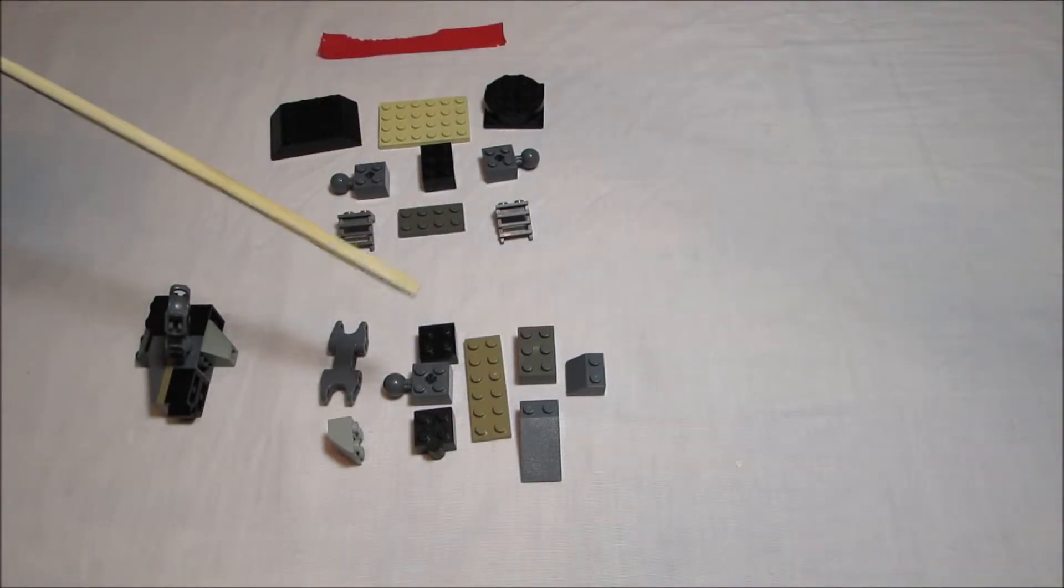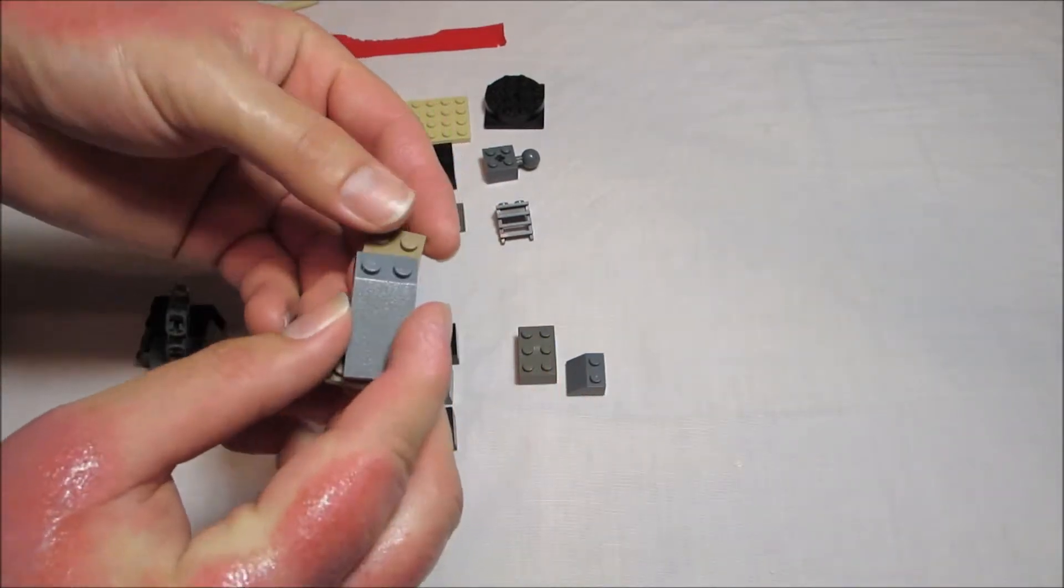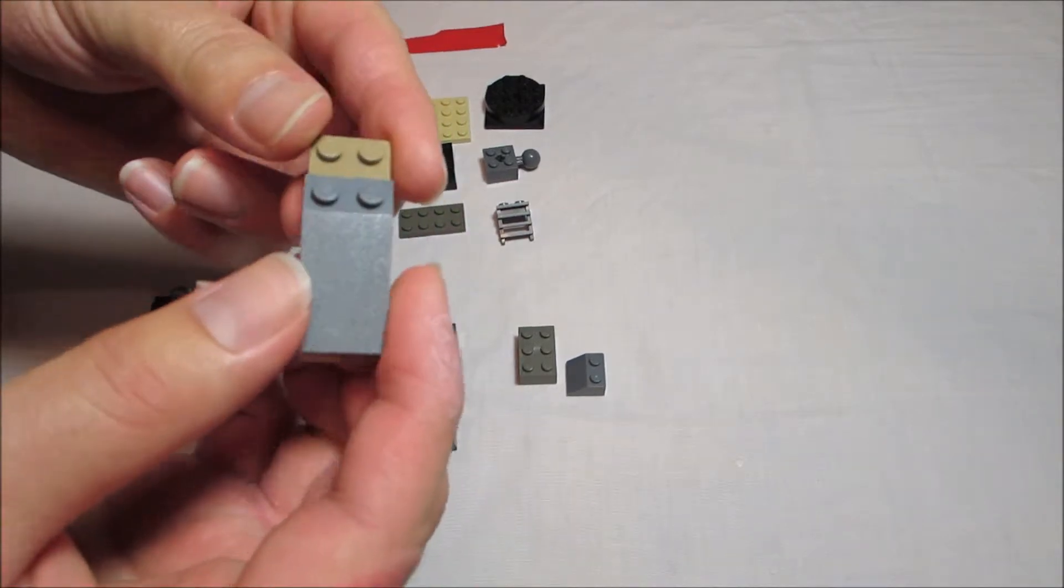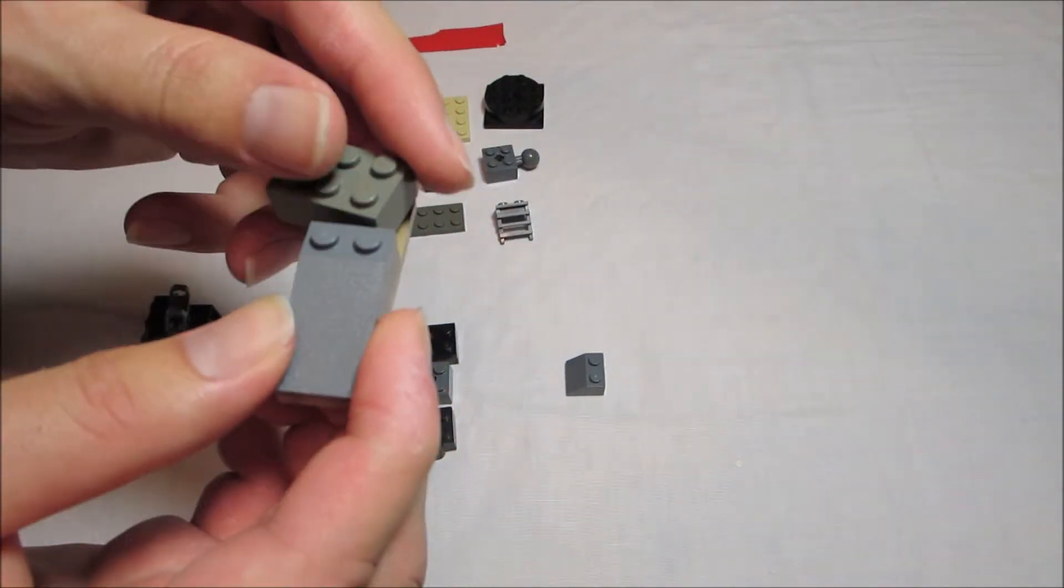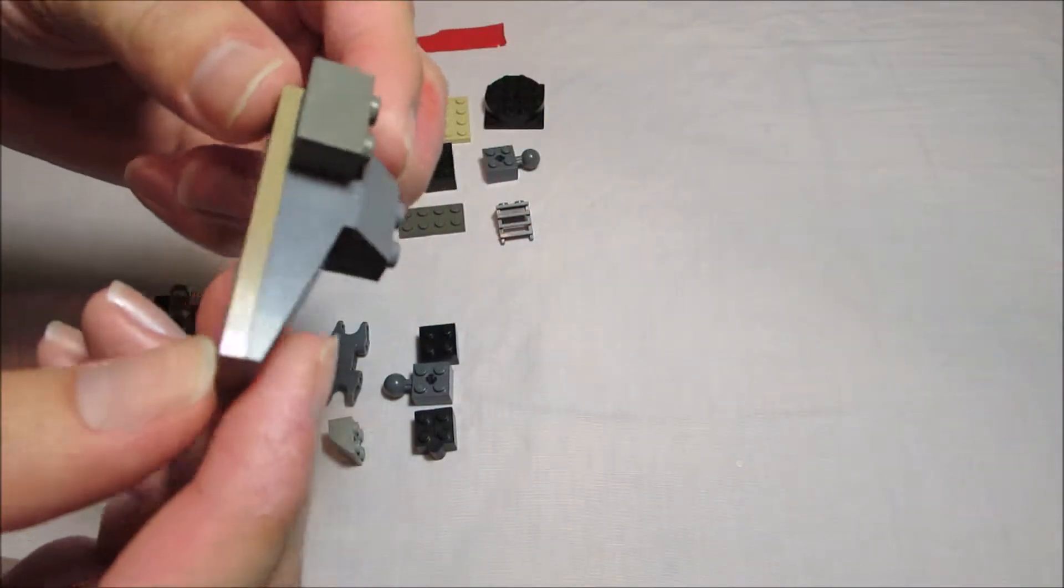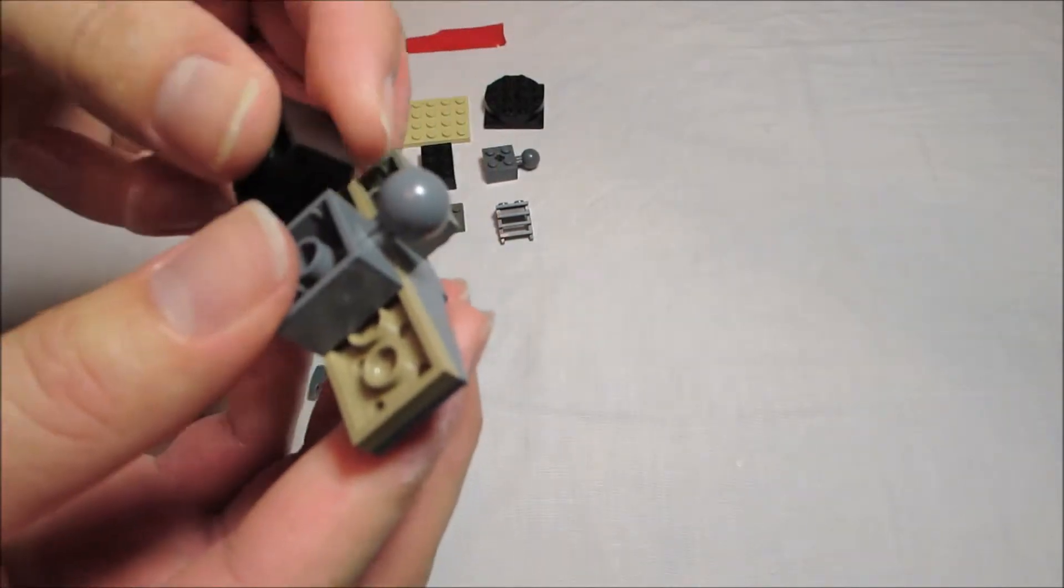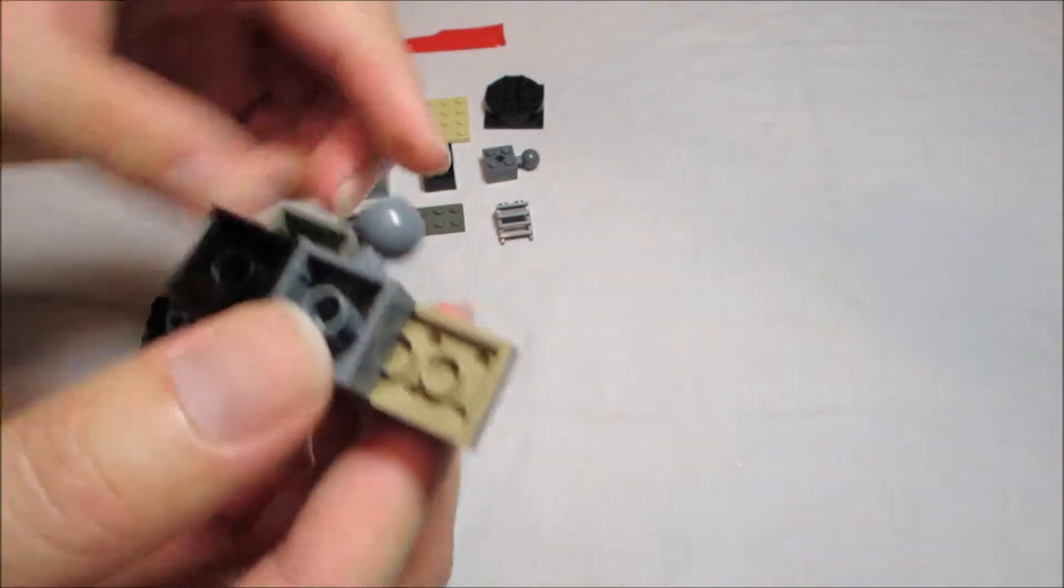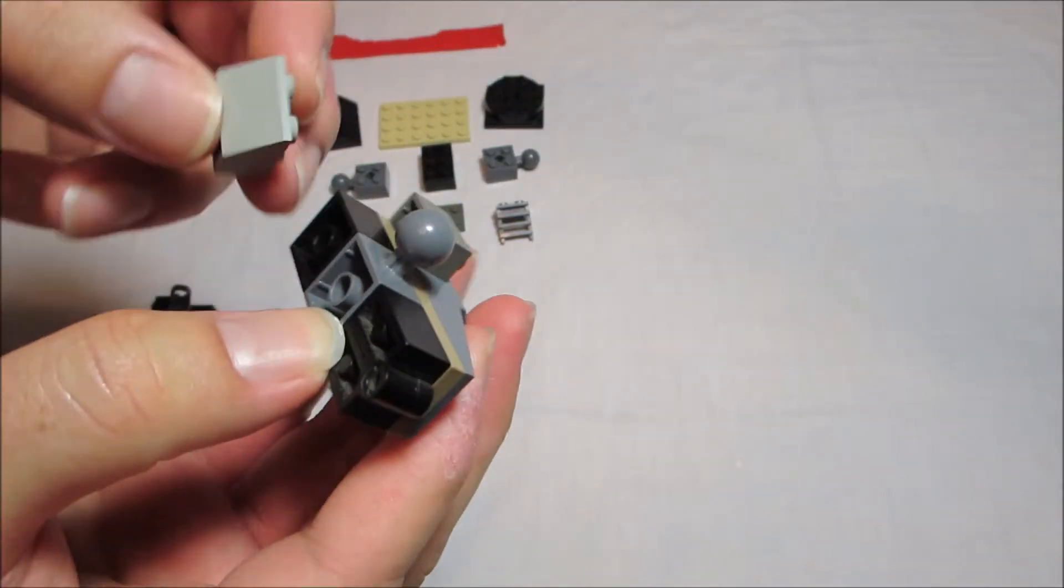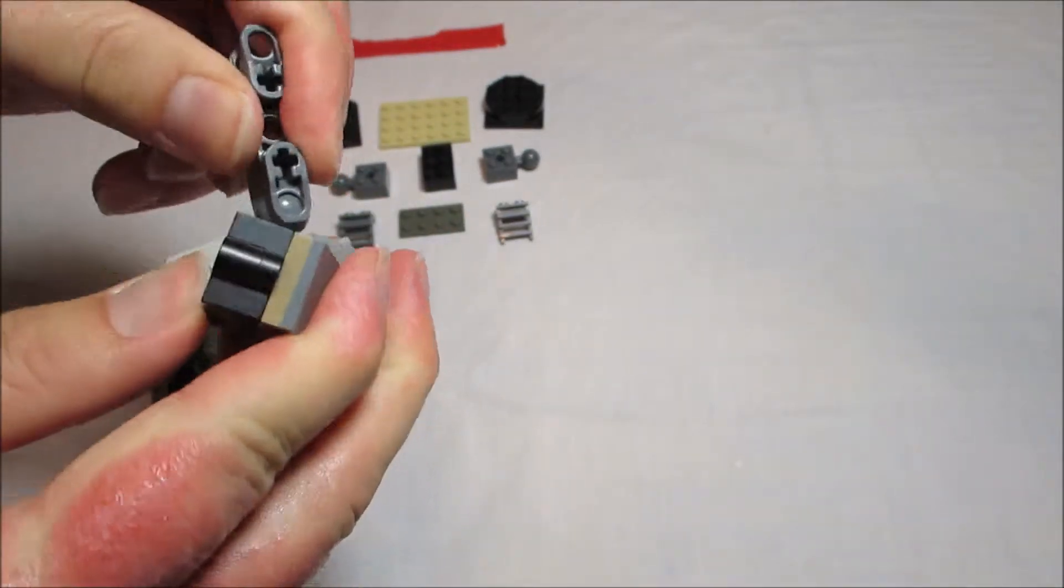And next we'll go to the left leg. Again this is a 1x6, sorry the 2x6 plate with a 2x4 angle brick. And this leg is the same design as the other just inverted. And this is one of the inverted bricks we'll use on the inside of the foot. And the actual connector will go there.